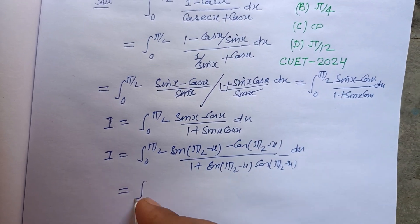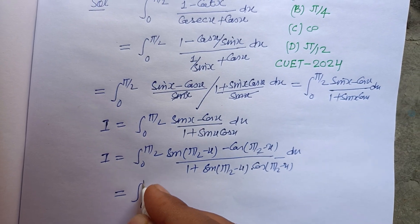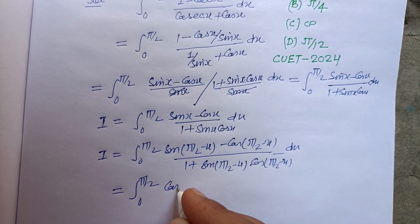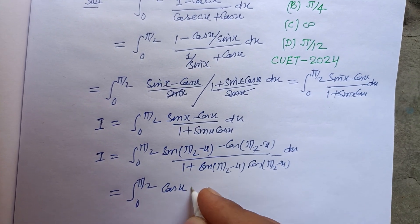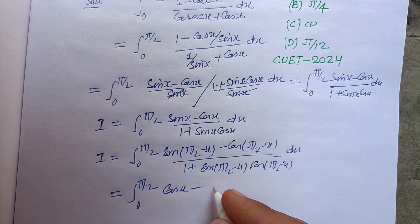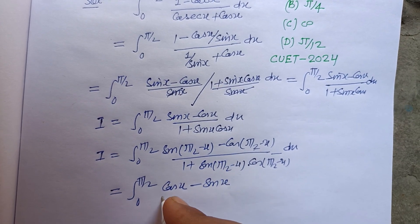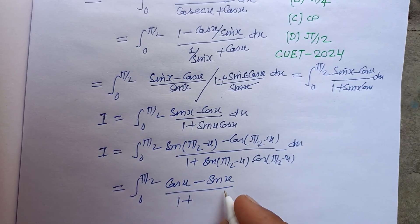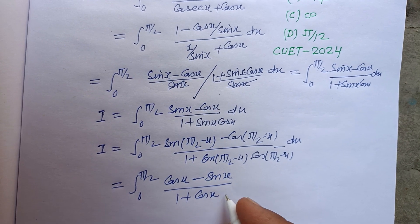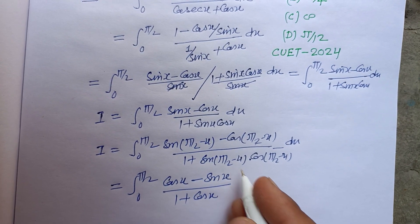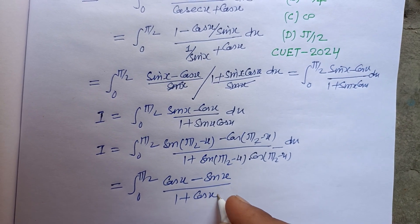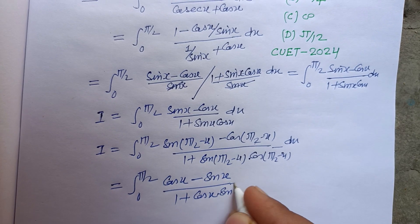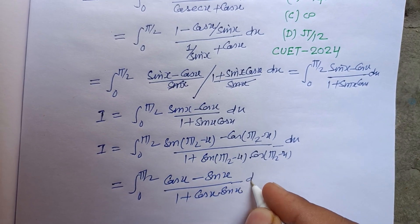Using sin(90° - x) = cos x and cos(90° - x) = sin x, the substituted integral becomes the integral from 0 to π/2 of (cos x - sin x) / (1 + cos x · sin x) dx.